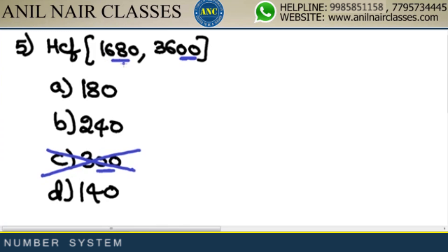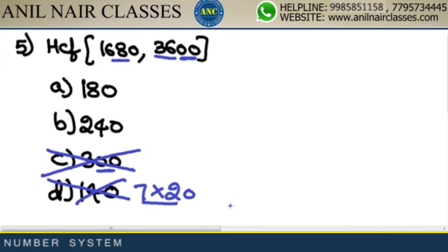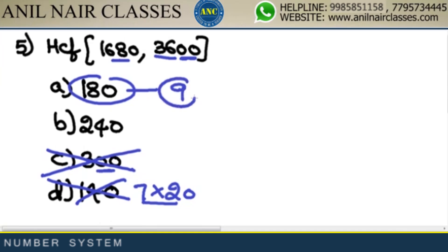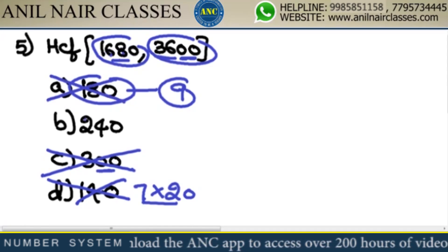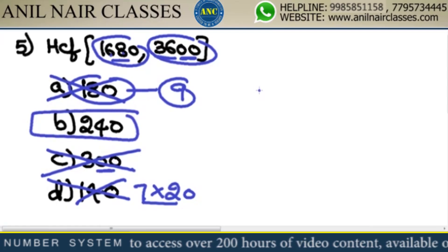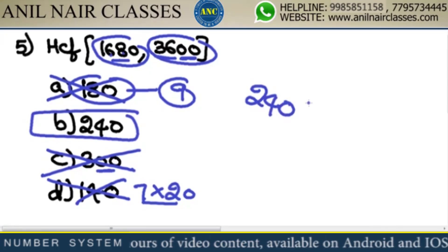300 is incorrect — 300 contains two zeros meaning it is divisible by 100, but 1680 is not divisible by 100, so 300 is out. 140 = 7×20, so the answer must be divisible by 7, but 3600 is not divisible by 7 — so 140 is out. 180 has digit sum 9, but 1680 has digit sum 15 which is not 9 — so 180 is out. The answer is 240.